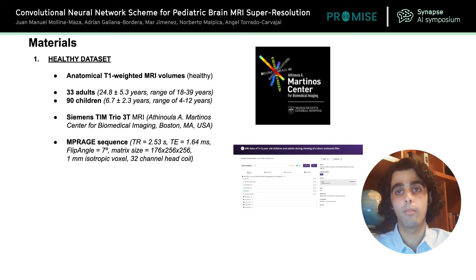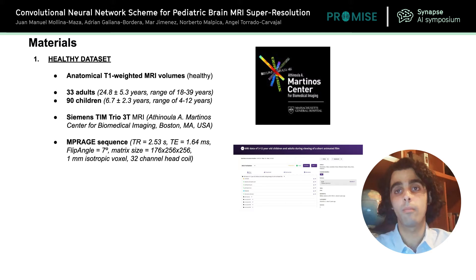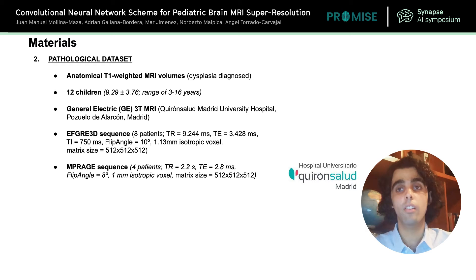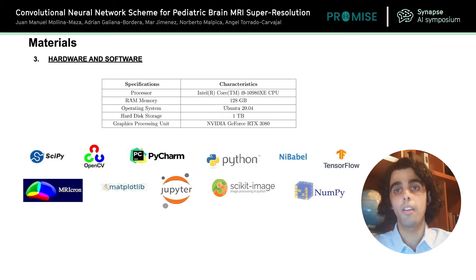Regarding the data, we use two different datasets, both composed of T1-weighted MRI acquired with a three Tesla scanner. The first one is open to public access on the OpenNeuro platform and contains volumes from healthy adults and children. The second dataset was provided by our partner hospital, including 12 children diagnosed with dysplasia and two kinds of MRI sequences.